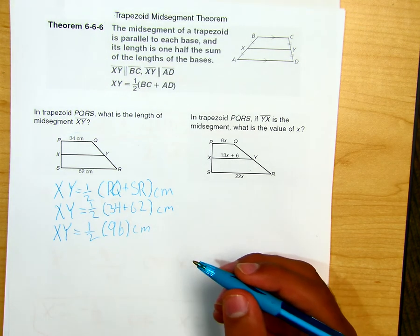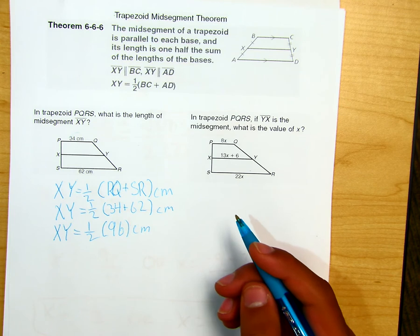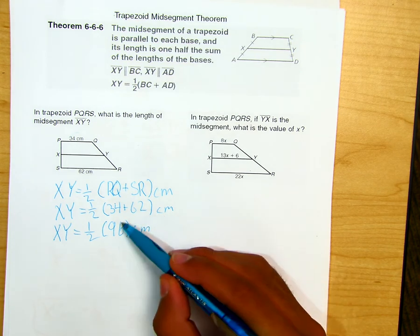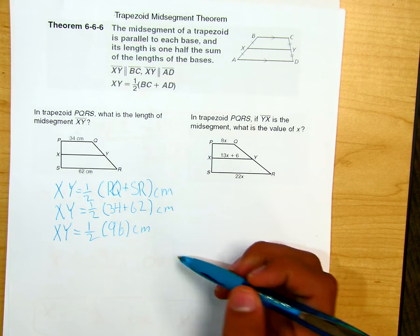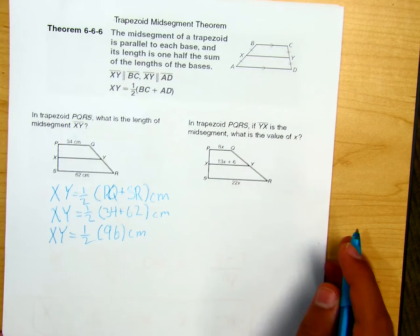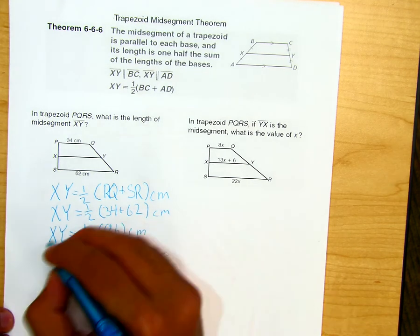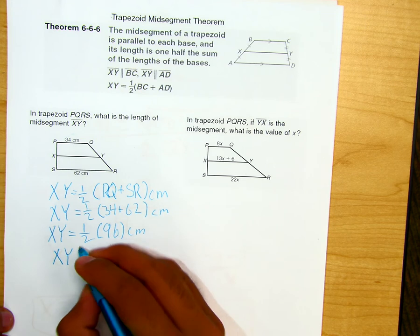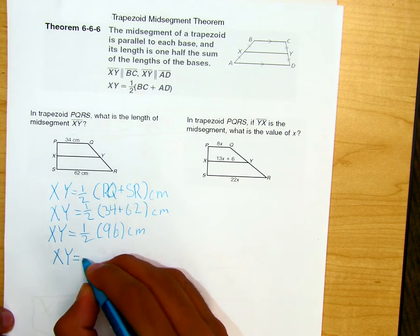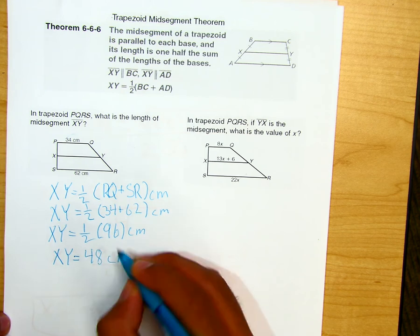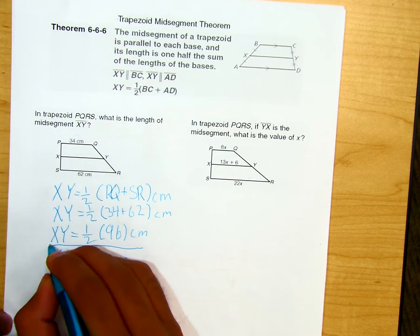What's that question? So how do you do 96? It is actually pretty simple. I added 34 and 62 centimeters. Just add them together. And then after you add that together, you do the actual equation for one-half, 96 centimeters. Just multiply them and it will equal 48 centimeters. Remember to box your answers.